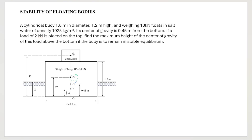Let's continue the discussion on the sample problem on the stability of floating body. A cylindrical buoy 1.8 meters in diameter, 1.2 meters high, and weighing 10 kilonewtons floats in saltwater of density 1025 kilograms per cubic meter. Its center of gravity is 0.45 meters from the bottom. If a load of 2 kilonewtons is placed on top, find the maximum height of the center of gravity of this load above the bottom if the buoy is to remain in stable equilibrium.